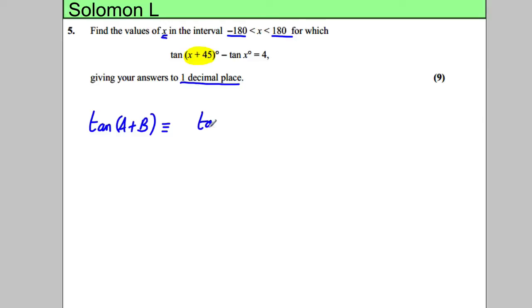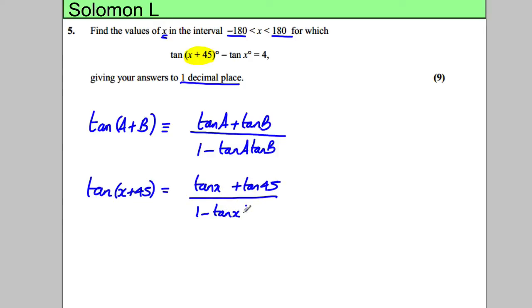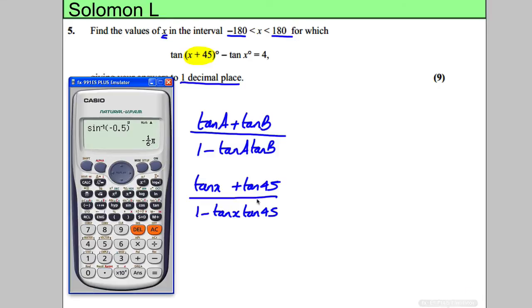It's given by tan A add tan B divided by 1 subtract tan A multiplied by tan B. Therefore tan of X plus 45 degrees will be tan X plus tan 45 divided by 1 subtract tan X multiplied by tan 45.